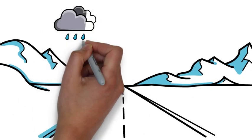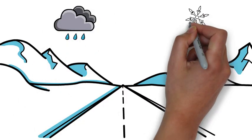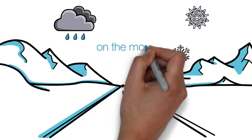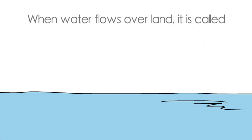When rain falls or snow melts, it does not simply stay in one place. Most of it begins to move. When water flows over land, it is called surface runoff. This is an important part of the water cycle.